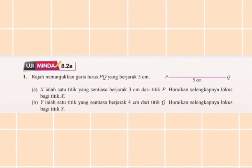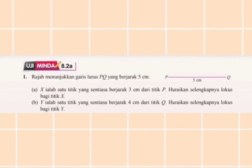Soalan B: Y ialah satu titik yang sentiasa berjarak 4 cm dari titik Q. Huraikan selengkapnya Locus bagi titik Y. Y merupakan Locus yang berjarak 4 cm dari titik Q. Titik Q merupakan satu titik tetap, maka bentuk yang dihasilkan ialah bulatan. Jawapannya: Locus Y ialah satu bulatan yang berpusat di Q dan berjari-jari 4 cm.